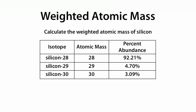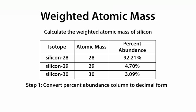Silicon-28 has a percent abundance of 92.21%. Silicon-29 has a percent abundance of 4.70%, and silicon-30 has a percent abundance of 3.09%. These percents add up to 100%, meaning all silicon atoms in the universe are either silicon-28, silicon-29, or silicon-30. Step one: convert percent abundance to decimal form by dividing each percent by 100. So 92.21% becomes 0.9221, 4.70% becomes 0.0470, and 3.09% becomes 0.0309.